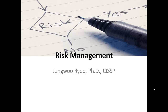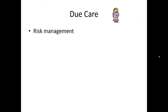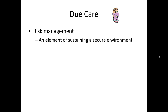In this video we are discussing risk management. You can think of risk management mainly in the context of due care. Due care focuses more on the maintenance or follow-up on what was planned in the due diligence process, where planning was the focus. Risk management is very relevant to due care because it's an ongoing process that sustains a secure environment, and the true goal of risk management is to reduce risk to an acceptable level.